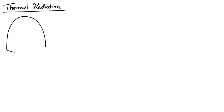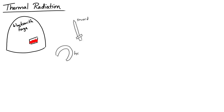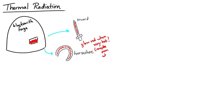Let's take a look at more about thermal radiation. Imagine you have a very hot sword or a horseshoe that was created by a blacksmith, and they just took it out of the forge. Those objects should glow red or white when they're very, very hot. So hot things emit light.